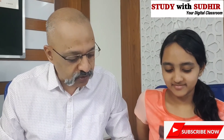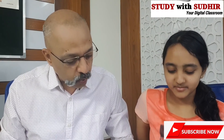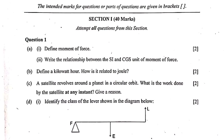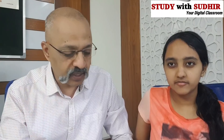Let's start. I'll be reading out the questions and Tejasvini will read out the answers. Question 1a: Define moment of force. The definition is: the turning effect on a body about an axis due to an applied force is called moment of force. The word 'axis' can also be replaced by 'fixed axis,' 'fulcrum,' 'fixed point,' or 'pivot.'